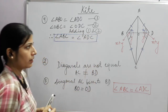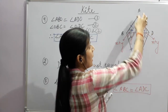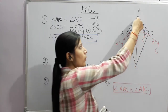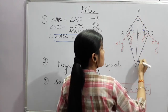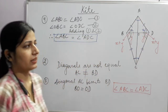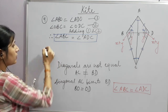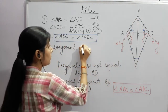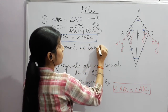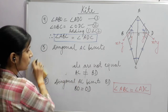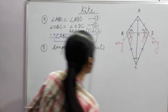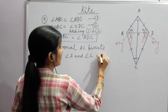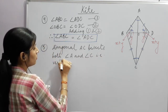Now let us see the next important point. Diagonal AC not only bisects BD into two equal parts, but it also bisects angle A and angle C. These are the vertex angles of the kite.